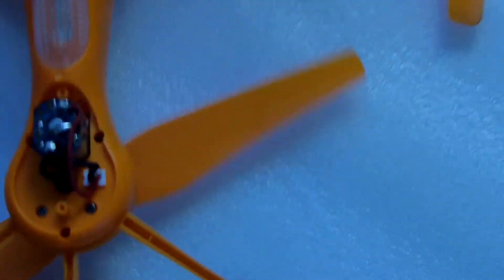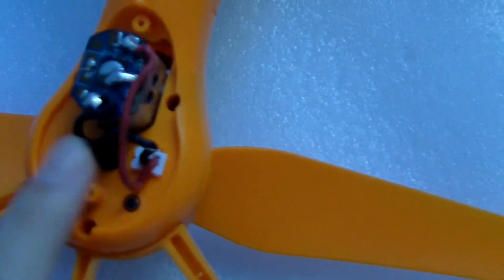And how about the other one for B? This is B. The wire color for B motor is different. The color is red and black.